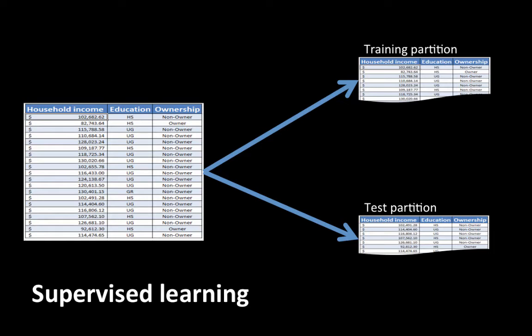Now if the model does well on this, we say the model took some data that it was not built upon — completely new independent data — and it still performed very well, so we can have faith in the model. On the other hand, if the model doesn't do well on the test data, then it's not a good model. Of course, we have to be careful about what we mean by good or bad. This process is called supervised learning, and this process of dividing the data into training partition and test partition is called partitioning of data. It plays a very central role in predictive analytics.